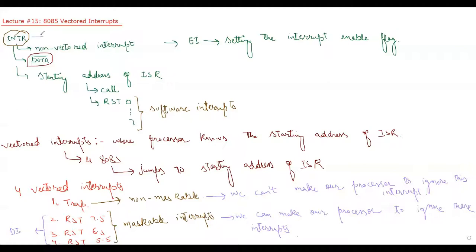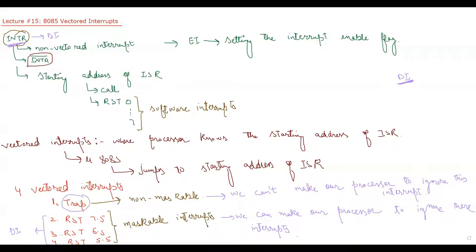If I use the DI instruction in my program — disable interrupts, meaning the interrupt enable flag is reset — then if any of these three maskable interrupts comes, the processor will ignore them. However, even if I have the DI instruction in my program, the processor will still not ignore the Trap interrupt. It is a critical interrupt used for critical situations.